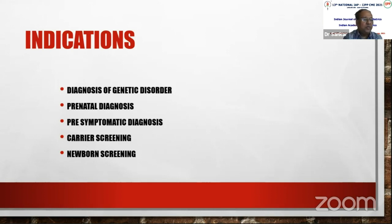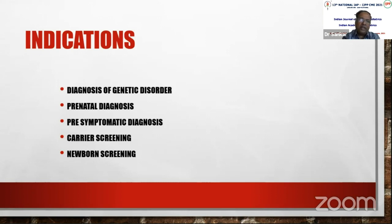Fourth is carrier screening — when two or three children are affected, the parents are probably carriers. Carrier screening can be done in high-risk families with multiple affected members, or in high-risk populations such as those at increased risk for beta-thalassemia, or in Ashkenazi Jews. Fifth is newborn screening, though genetic testing is not regularly recommended worldwide yet; in the next five to ten years, a genetic chip covering all diagnoses may become available.